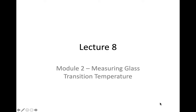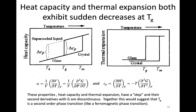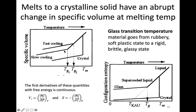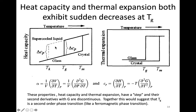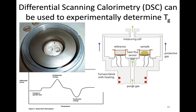We talked about melting and softening, or the glass transition temperature. In this module, I want to talk about how we can measure the glass transition temperature. We do it by monitoring those properties we saw in the previous slides — for example, heat capacity, which has a step change. Step changes are much easier to see than subtle slope changes, so if we can monitor the heat capacity, we can measure the glass transition temperature. We can do that with an experimental technique known as differential scanning calorimetry, or DSC.